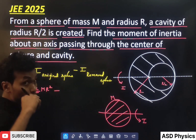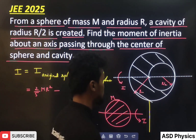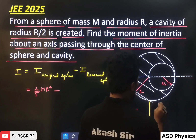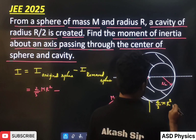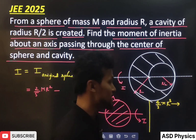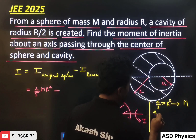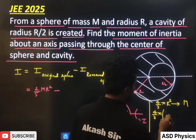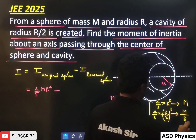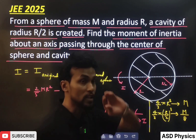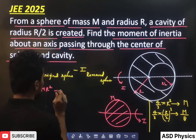For the removed sphere, we need to know its mass first. If the complete sphere — volume 4/3 π R³ — carries mass M, then the removed portion with radius R/2 has volume 4/3 π (R/2)³, which carries mass M/8. So the removed sphere had mass M/8.